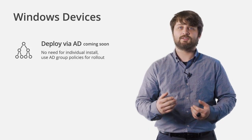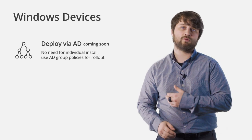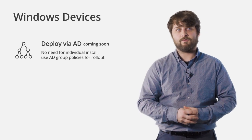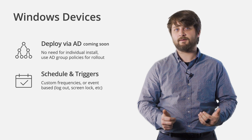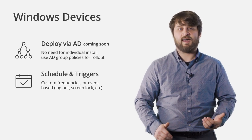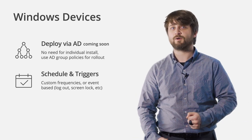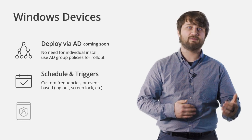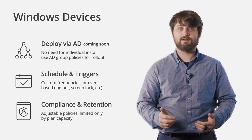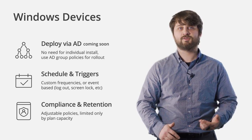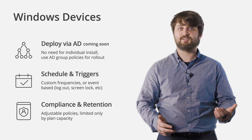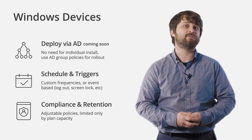For Windows devices, deployment via Active Directory is coming soon, making it easy to install and roll out Synology C2 Backup to endpoints using group policies. There are also options to schedule and trigger your backups — you can set custom frequencies, and event-based triggers such as when users log out, log back in, or when the device powers on. Different levels of compliance and retention can be set for your C2 backups, with adjustable and customizable policies limited only by your plan's capacity, so you can retain data as long as needed.